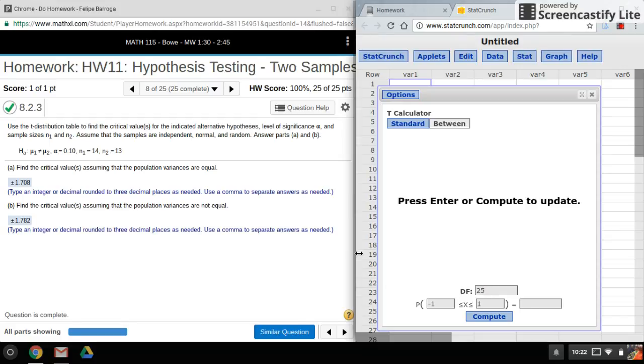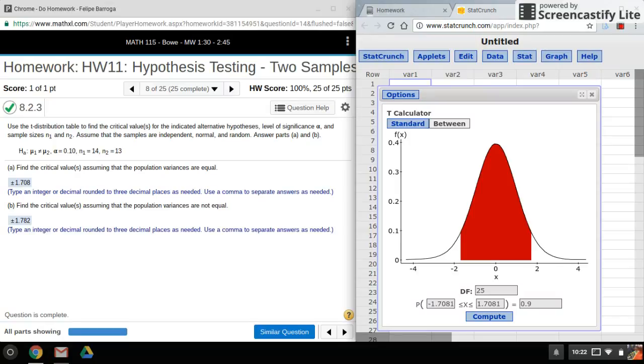Because it's a two-tailed test and StatCrunch won't let us do the area outside, we'll have to do one minus alpha. Click on compute and there's my critical values. I should have two because it's a two-tailed test.